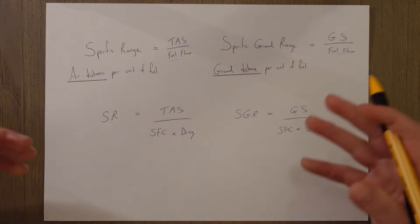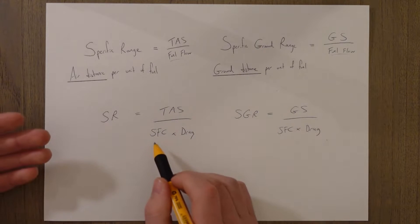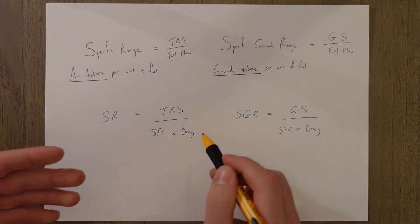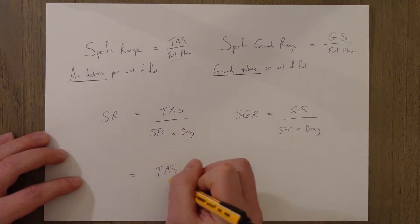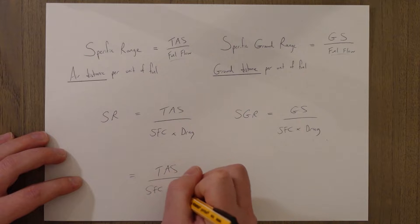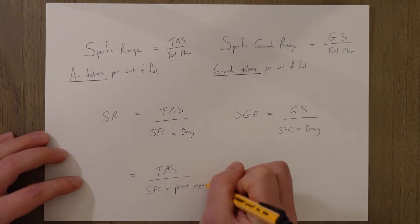For a propeller it is slightly different. The difference is that bottom line where we have to have the consideration of specific fuel consumption per unit of power. So we get the same equations, but on the bottom line it's power required at that phase of flight.